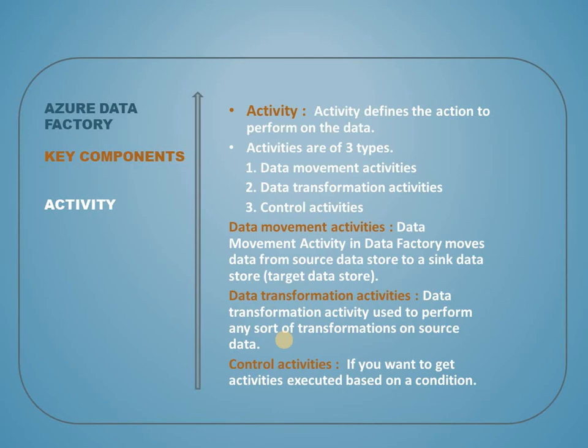The next component is Activity. An activity defines the action that we perform on the data. In Azure Data Factory, activities are categorized into three major groups: data movement activities, data transformation activities, and control activities. Data movement activities are mainly used to move data from source to destination. Data transformation activities are used to perform any sort of transformation on source data before loading it into the destination, including applying complex business logic.